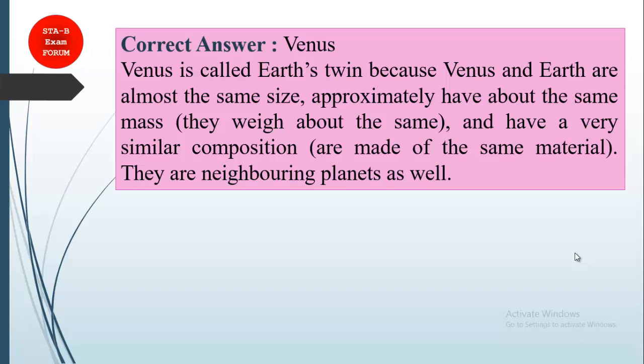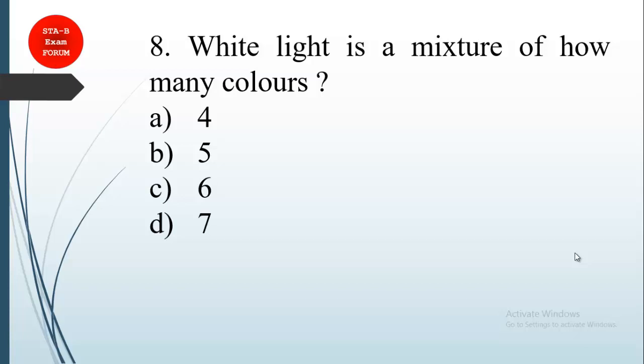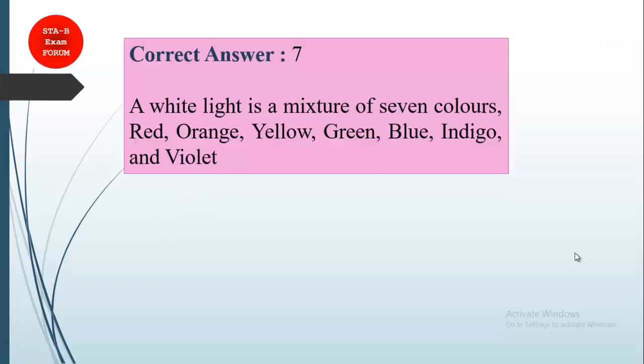Coming to the eighth question: white light is a mixture of how many colors? These are the options. Everybody knows that light is a mixture of seven colors. What are those? VIBGYOR. White light is a mixture of seven colors, the VIBGYOR colors.